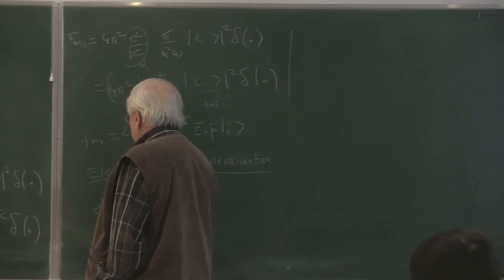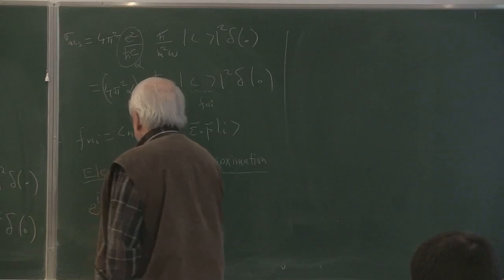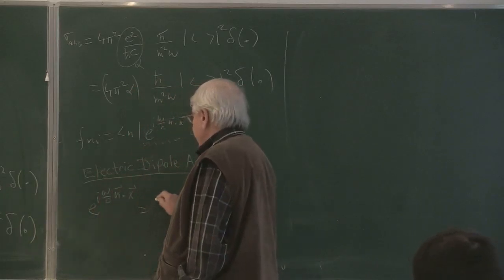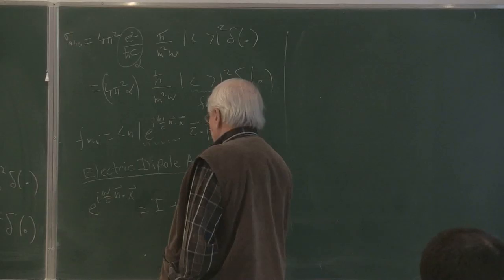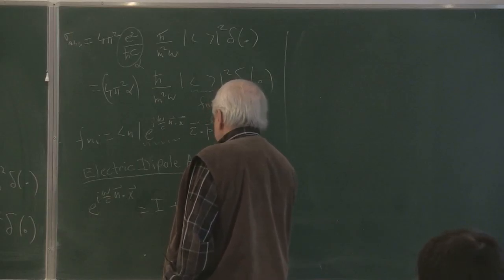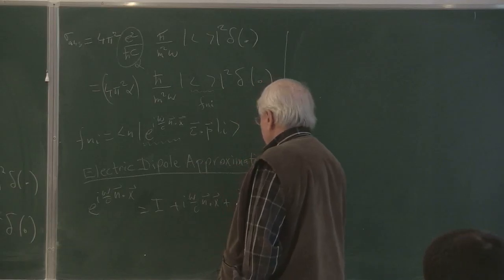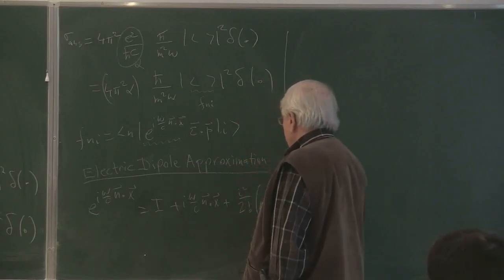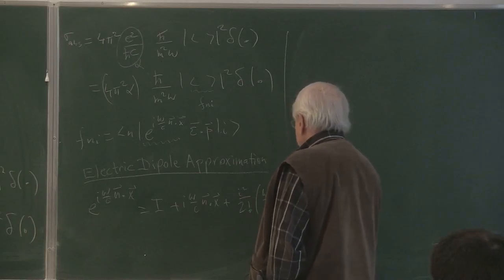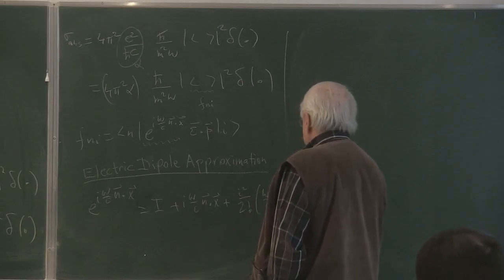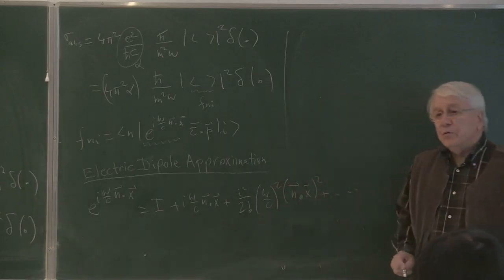This operator, in order to give it a meaning, you have to expand it as an infinite series expansion. That is what it means: 1 + i*(omega/c)*(n·x) + (i²/2!)*(omega/c)²*(n·x)² + etc. So there are infinitely many terms of that sort.